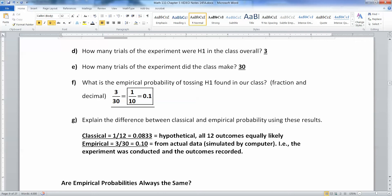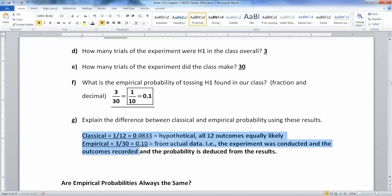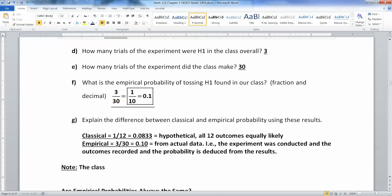The empirical is from the actual data. So in this case, I made it up with a computer, but you get the general idea. It came from actual data. And if that's the case, then that experiment was conducted and you recorded the outcomes and you created the probability from there. And the probability is deduced from the results. So they're not the same thing. They should be close to each other, though.